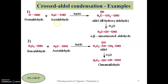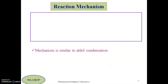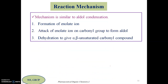Here are two examples of crossed aldol condensation. In the first example, acetaldehyde has alpha hydrogens, while formaldehyde does not have alpha hydrogen. Reaction between formaldehyde and acetaldehyde in the presence of base gives the corresponding aldol — enolate ion CH2CHO adds to the carbonyl carbon of formaldehyde — which upon dehydration gives the alpha beta unsaturated aldehyde. Similarly, reaction with benzaldehyde (C6H5CHO) gives cinnamaldehyde after dehydration.